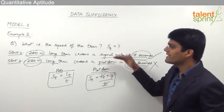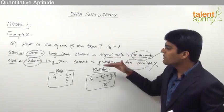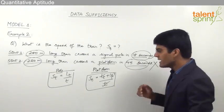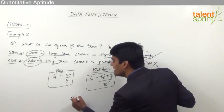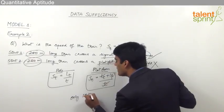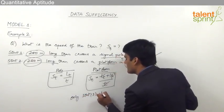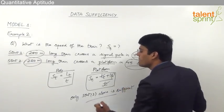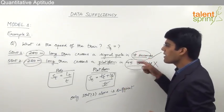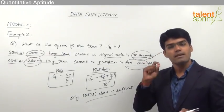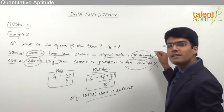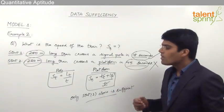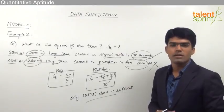Clearly, Statement 1 alone can give the answer but Statement 2 alone cannot. Therefore, the answer should be option 1 — only Statement 1 alone is sufficient. Since one statement alone is sufficient, we need not combine both statements. Remember: we combine both statements together if and only if both statements individually fail to answer the question.